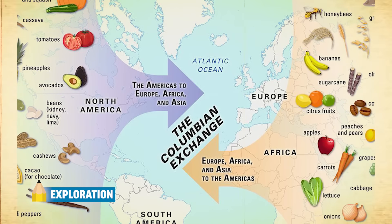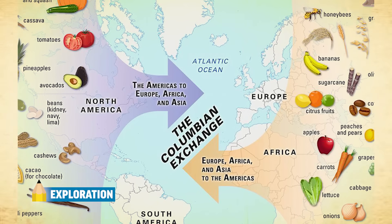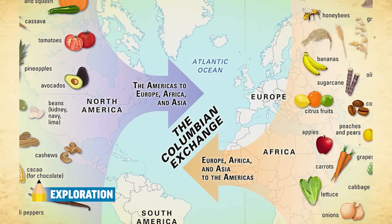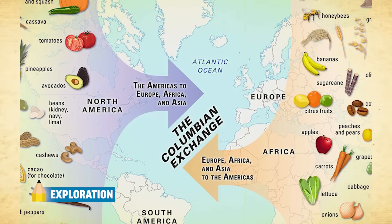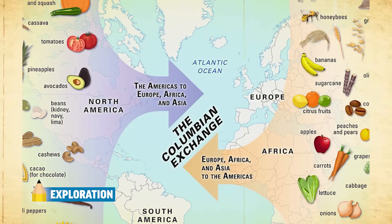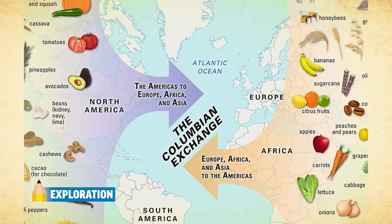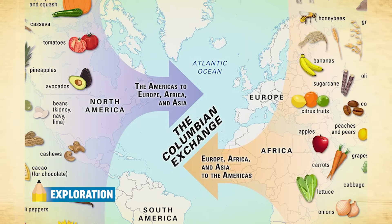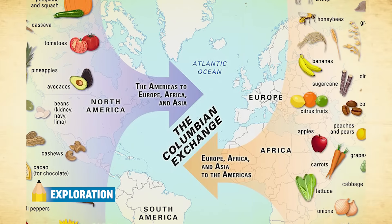This new transatlantic trade route sets up the Columbian Exchange — the transfer of goods, ideas, people, and diseases from Afro-Eurasia to the Americas. This has a positive social impact on Europe: nutrient-dense foods from the Americas, like the potato, are brought back to Europe, leading to population increase. The European population rises back to pre-Black Plague levels.